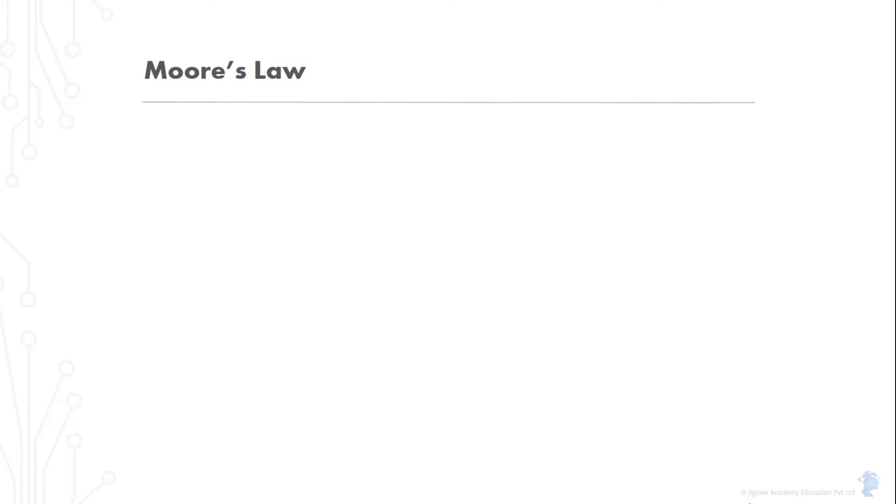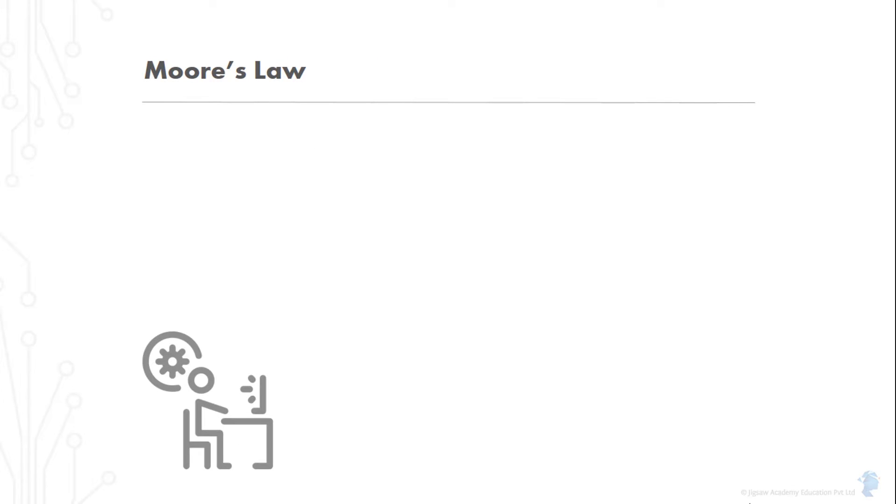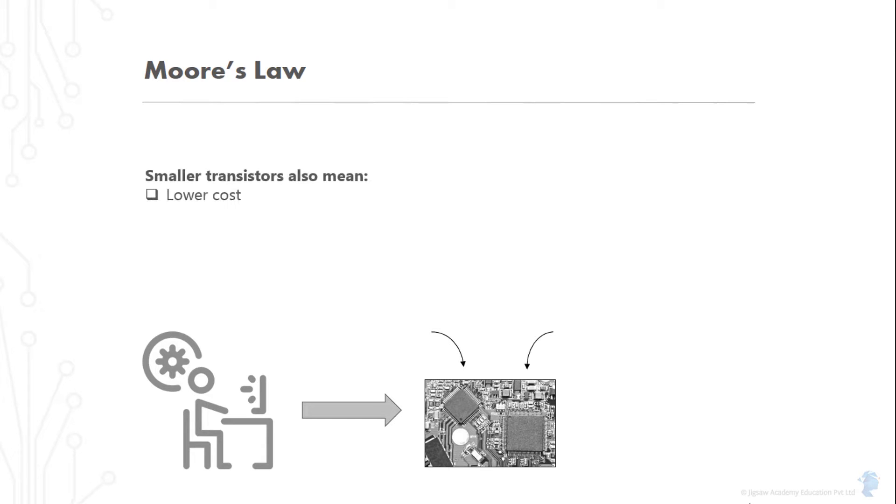Surprisingly, it has held true for more than 50 years, longer than anyone, even Moore, would have hoped when he initially formulated it. Chip designers figure out newer and newer ways to miniaturize components that go into integrated circuits. This has the effect of reducing price and power consumption of computer chips while increasing their speed.